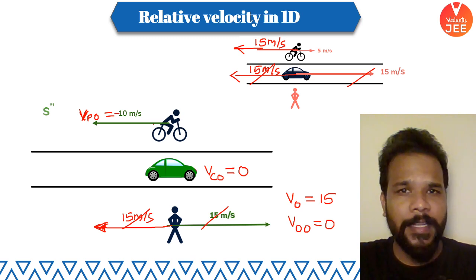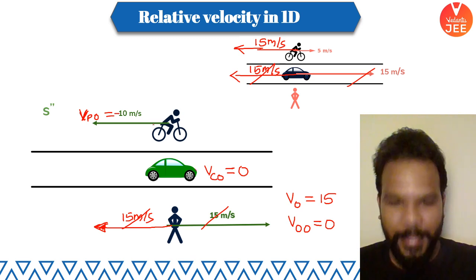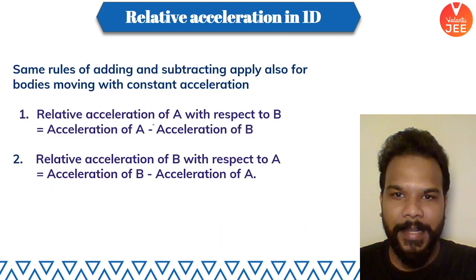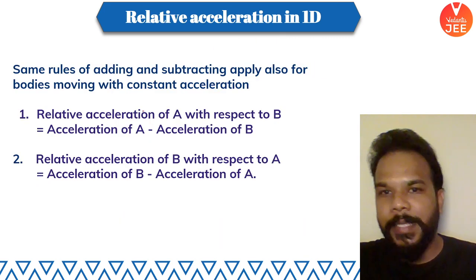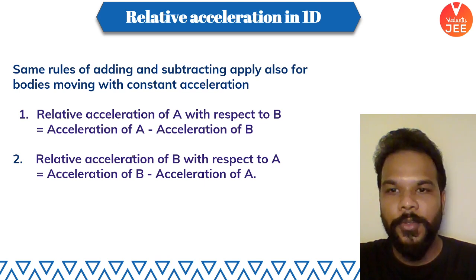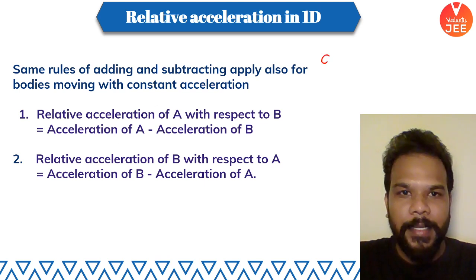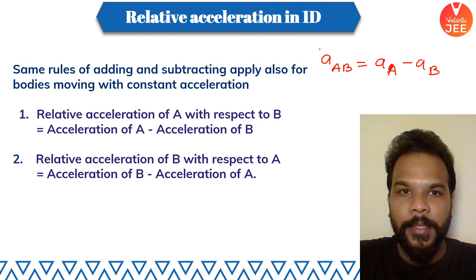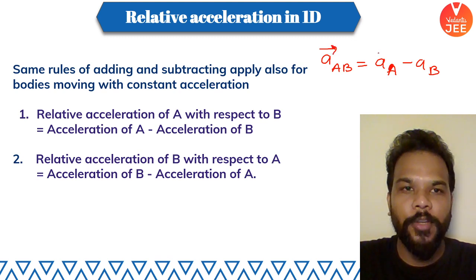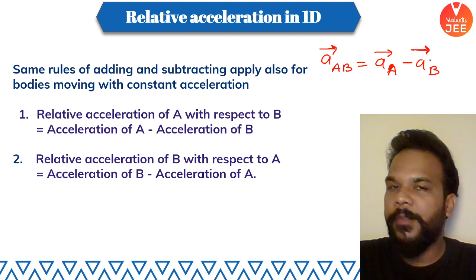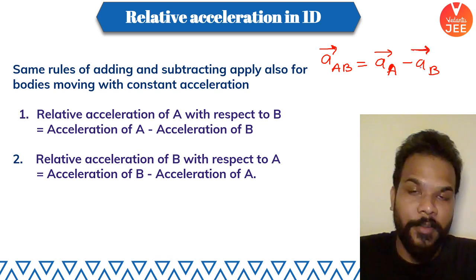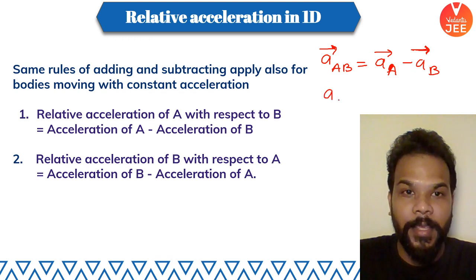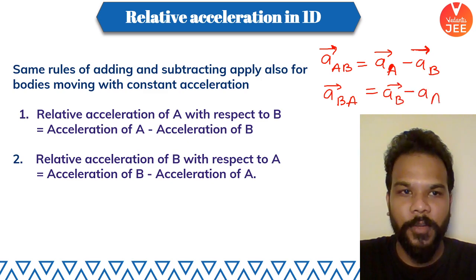The same concept applies to acceleration. Acceleration of A with respect to B = a_A − a_B. You bring the observer's acceleration to zero, then apply the same opposite acceleration to everything he observes. The observer never accelerates with respect to himself.